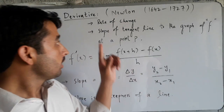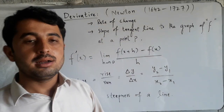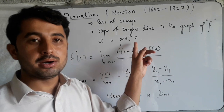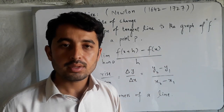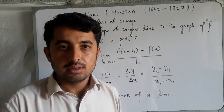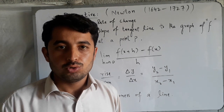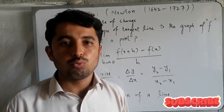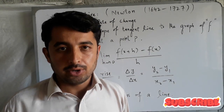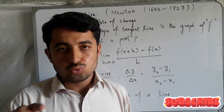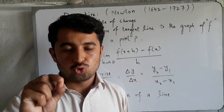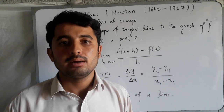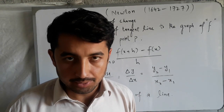Mathematically, the derivative is the slope of the tangent line to the graph of the function f at a particular point P. Kisi bhi graph par ek khaas point par jo tangent line hota hai, us tangent line ke slope ko hum derivative kehte hain — us particular point par jo slope hota hai, use hum derivative of that function at that point kehte hain.